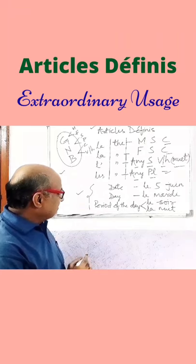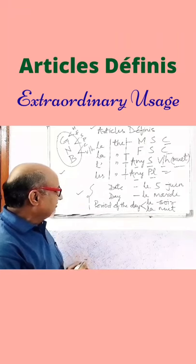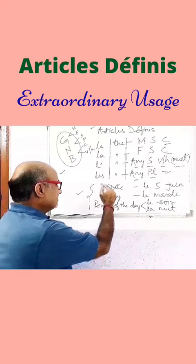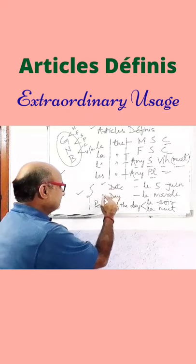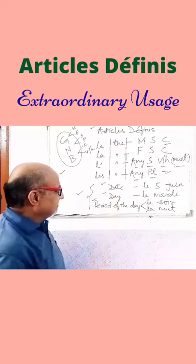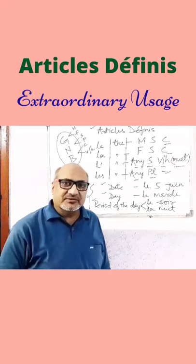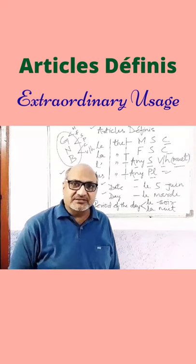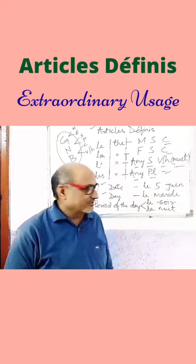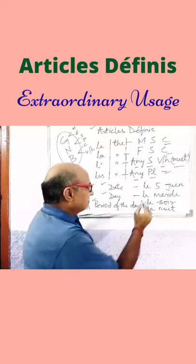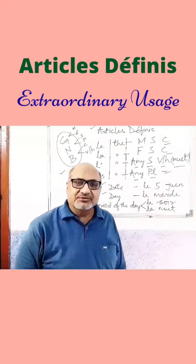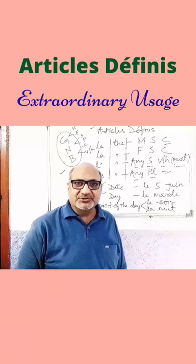As regards the extraordinary usage, we must keep in mind that in the case of date, day, and period of the day, they are to replace the prepositions 'on' or 'in' in French. For example, 'le 5 juin' means 'on the 5th of June.'